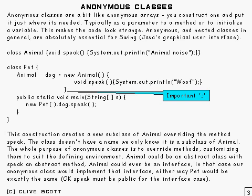Typically you're going to use it as a parameter to a method or to initialise some sort of variable. And, of course, this does make the code look very strange, but you get used to it. In particular, these anonymous classes are absolutely essential for things like Swing, which is Java's graphical user interface. So let's have a look at one anyway.